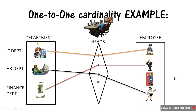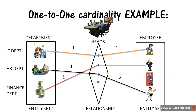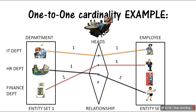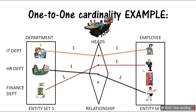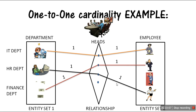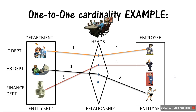One-to-one cardinality ratio means one department will have only one head of department, and one employee can be head of only one department at a time — he or she cannot be head of more than one department at a time. It also tells us the maximum number is one, not always necessarily one.